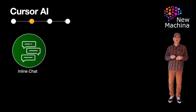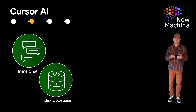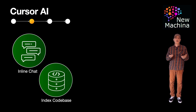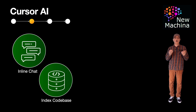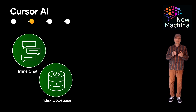Cursor AI supports codebase-wide understanding. It indexes your entire codebase and allows you to ask questions about your project like, "Where is this function used?" or "What APIs does this service call?" It does this by using embeddings and storing them in an internal vector data store, which enables it to search semantically and not just by exact text matches.